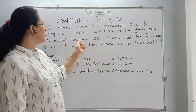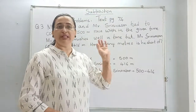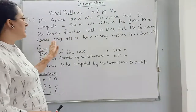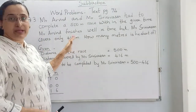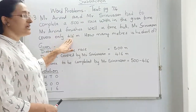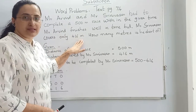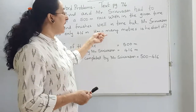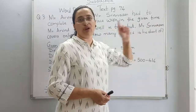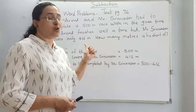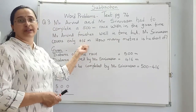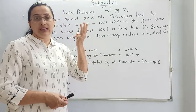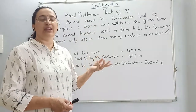Mr. Arvind finishes the race within time. But Mr. Srinivasan has not completed the full 500 meters in the given time. He has completed only 416 meters. What is asked? Find how many meters is he short of. Short of means how many meters he has not covered.